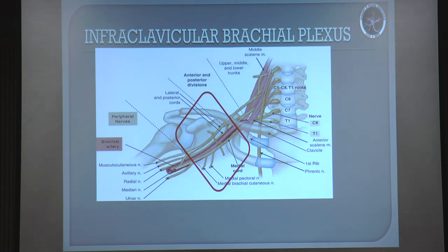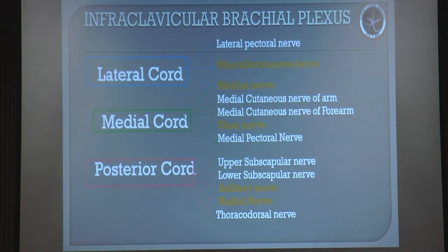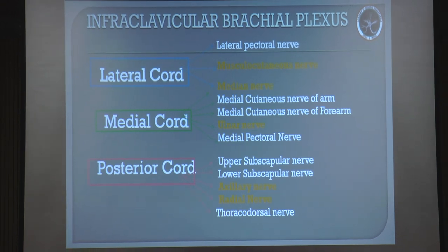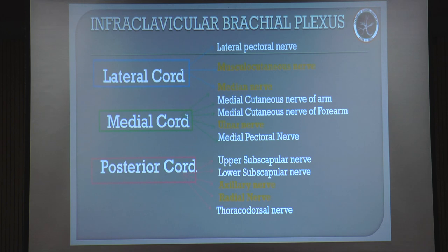I'm not going into much detail of anatomy. These are the three cords which we block at the infraclavicular level: the lateral cord, the medial cord, and the posterior cord. And these are the five important nerves which are required mainly for your surgery where you block. All three cords will be blocked if you block at the cord level.